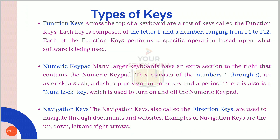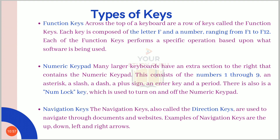Function keys run across the top of the keyboard — F1 through F12. Each function key performs a specific operation depending on the software being used. The numeric keypad, found on larger keyboards, contains numbers 1–9, 0, asterisk, slash, dash, plus sign, and a Num Lock key to turn it on or off. Navigation keys, also called direction keys, are used to navigate through documents and websites — these are the up, down, left, and right arrow keys.